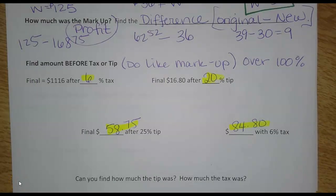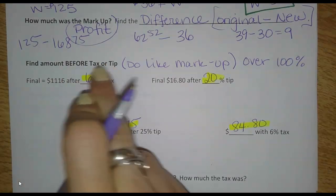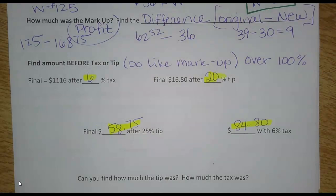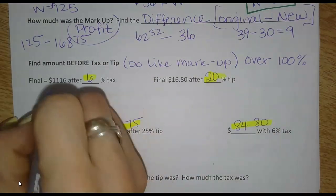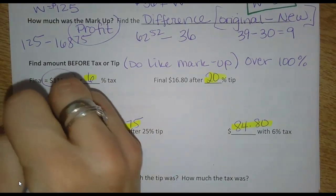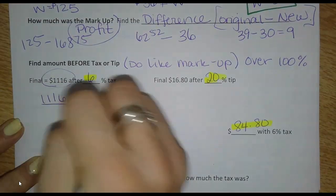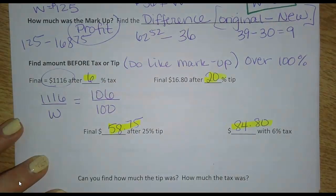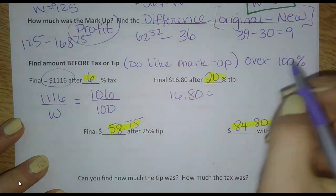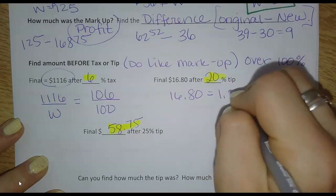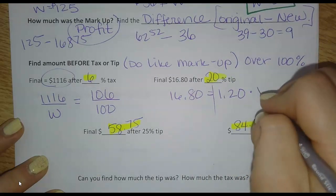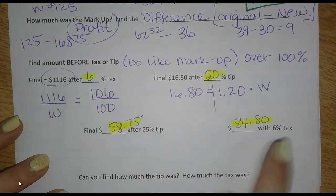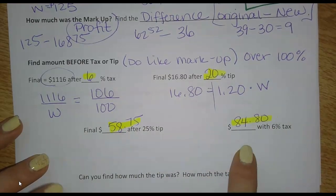What about if we want to figure out what the total was before we added on a tip or a tax? Well, you're going to do these just like the markup. You're paying more than 100%. You've got to figure out what the original price was. So I'll do one as a proportion and one as an equation again. You ended up paying that total. So that's your new price, $1,116. And with a 6% tax, you paid 106%. Find the original price. Or this one, you paid $1,680. That's with 20% tip. So 120% if I'm doing the equation here. And I'm looking for the original price like that. So you would solve these just the same way. So go ahead and finish. I have one more tip and one more tax problem. Solve these and then come back and check.